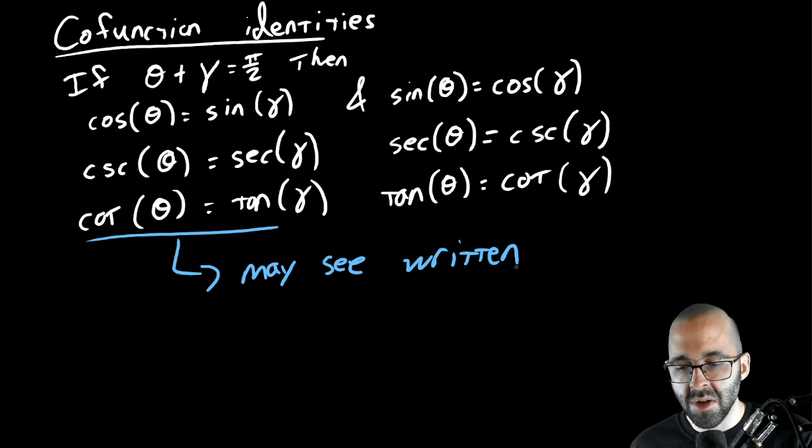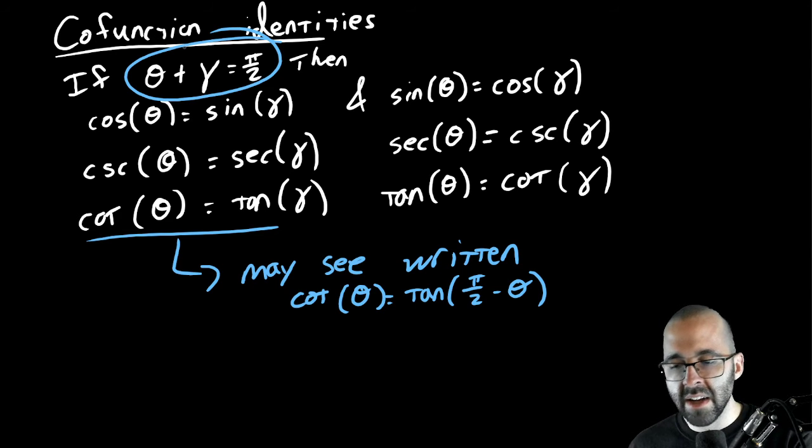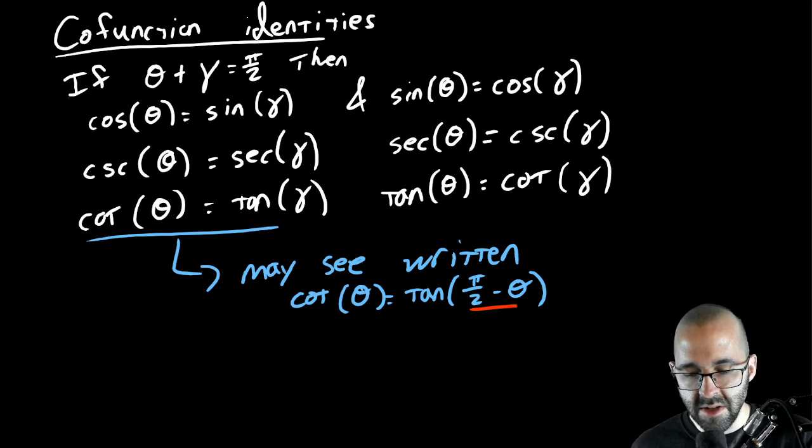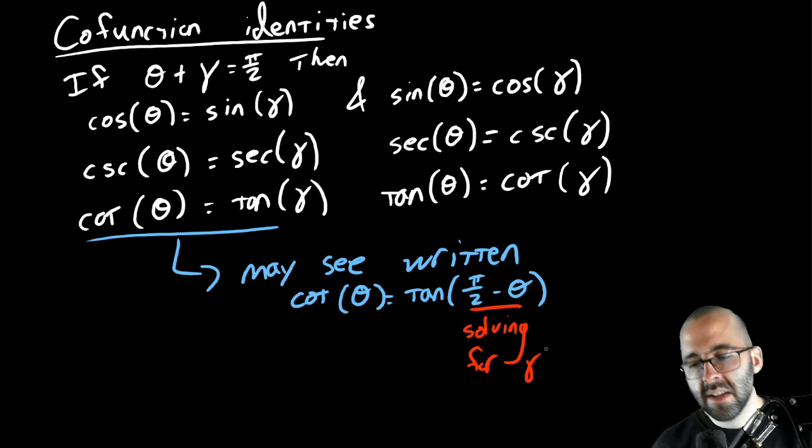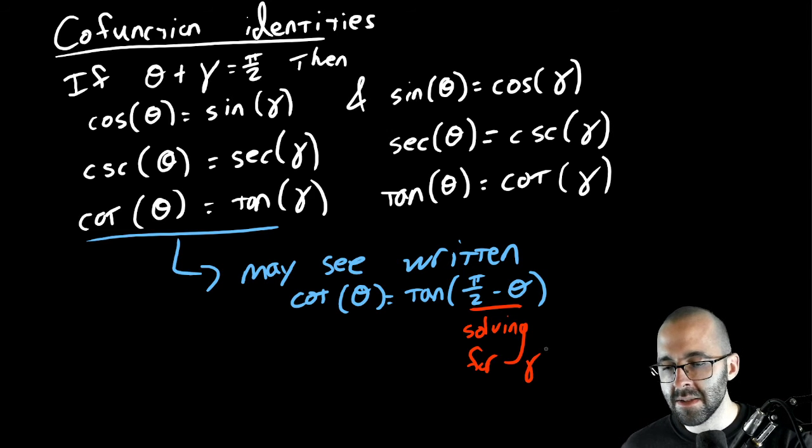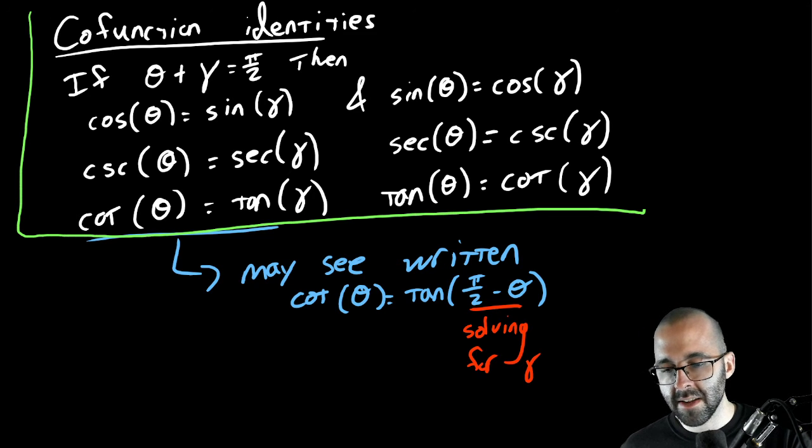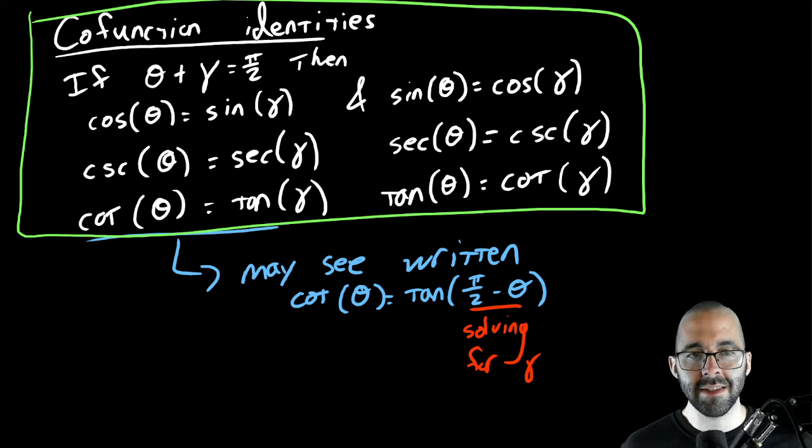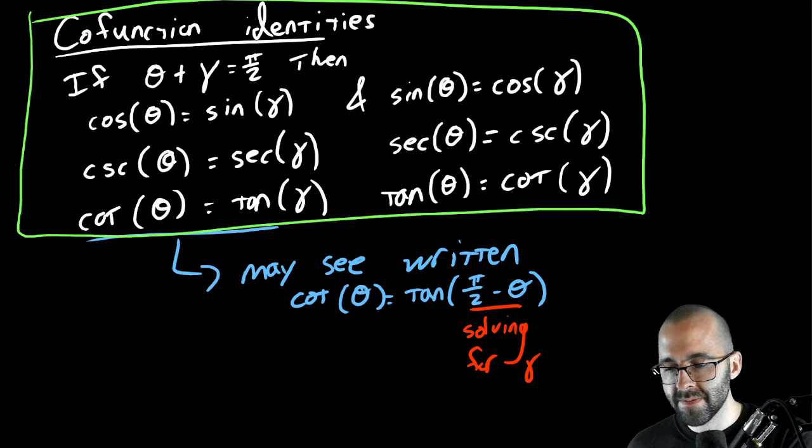You may sometimes see them written without two variables. The book only uses one variable. The book says the cotangent of theta is equal to the tangent of pi over 2 minus theta. But remember, if two things add up to pi over two, this is just solving for gamma. So these are all the same. If you have co-functions and complementary angles, then those trig function values are the same. And again you don't need these memorized, you can box these. Let's use them.